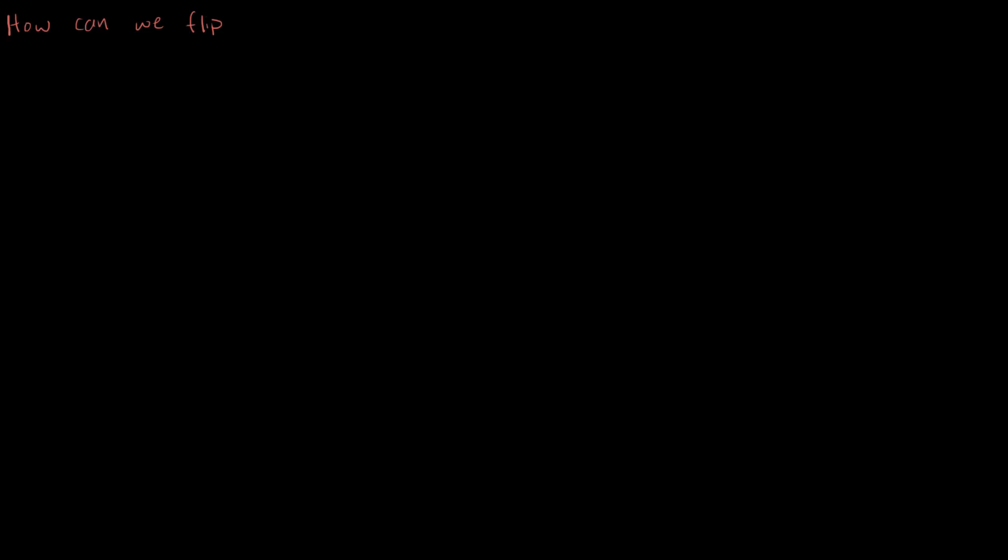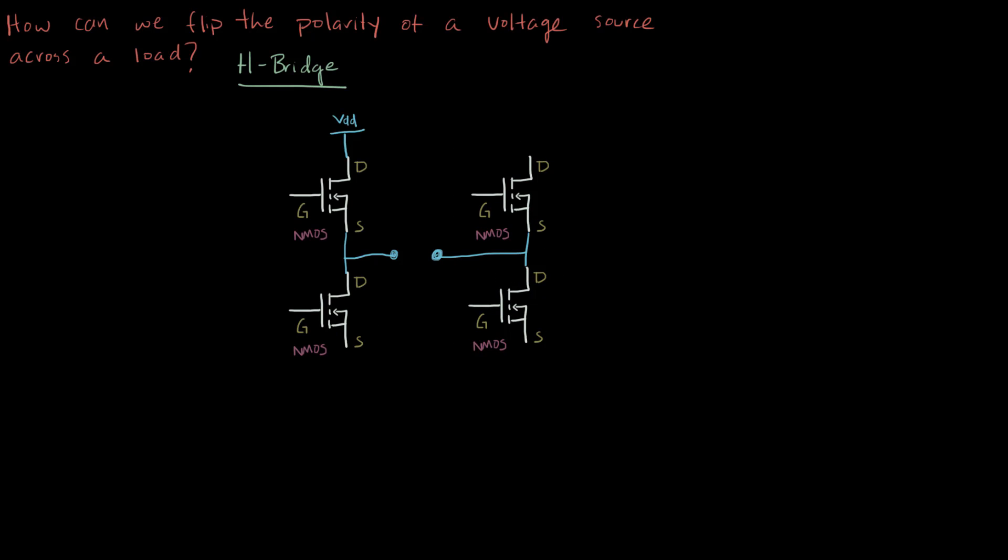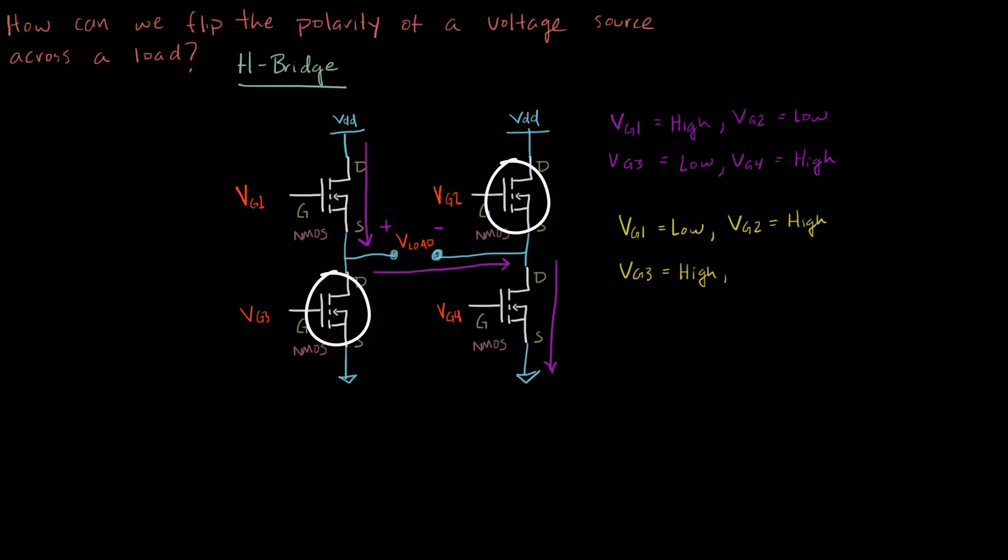Now the question becomes: how can we programmatically flip the polarity of a voltage across a load? One common answer to this problem is to use an H-bridge. An H-bridge consists of four switches, which are usually MOSFETs. These MOSFETs are arranged such that when only MOSFETs 1 and 4 are turned on, current flows from left to right through the load. When MOSFETs 2 and 3 only are turned on, current flows from right to left through the load.